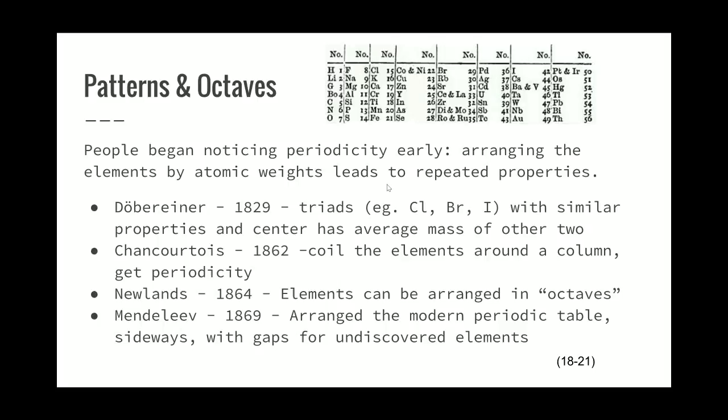Then you get an Englishman named Newlands in 1864, who noticed that they could be arranged in octaves. This got him made fun of - people asked him to play songs with his elements. People were kind of weird, and he was kind of right. We know now where the octaves come from, because two s electrons plus six p electrons is a total of eight.